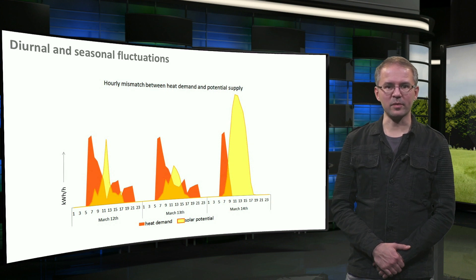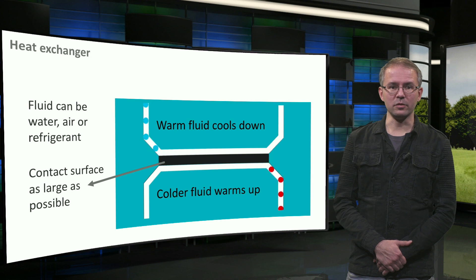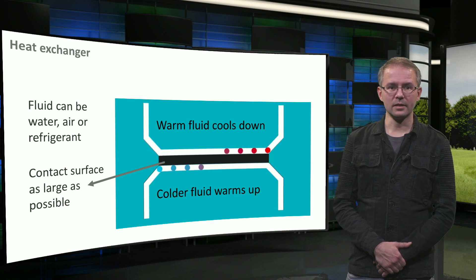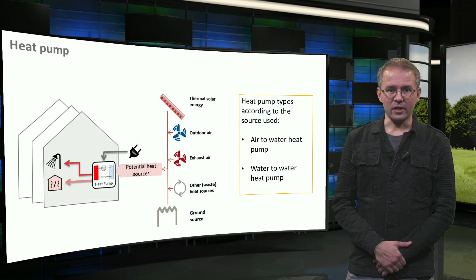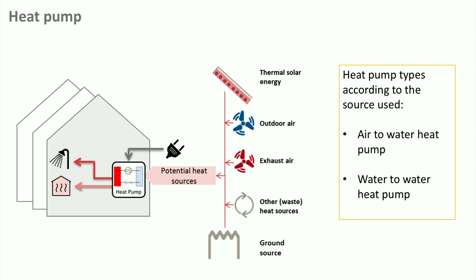Sabine has previously explained storage principles. A heat exchanger, as Eric explained, helps transfer the energy to or from the source medium. If we need a higher or lower temperature than the source and heat exchanger can provide, we also need a heat pump. A quick recap: a heat pump can move heat from one place to another by using electricity or gas, and in the process increases the output temperature to something we can use.